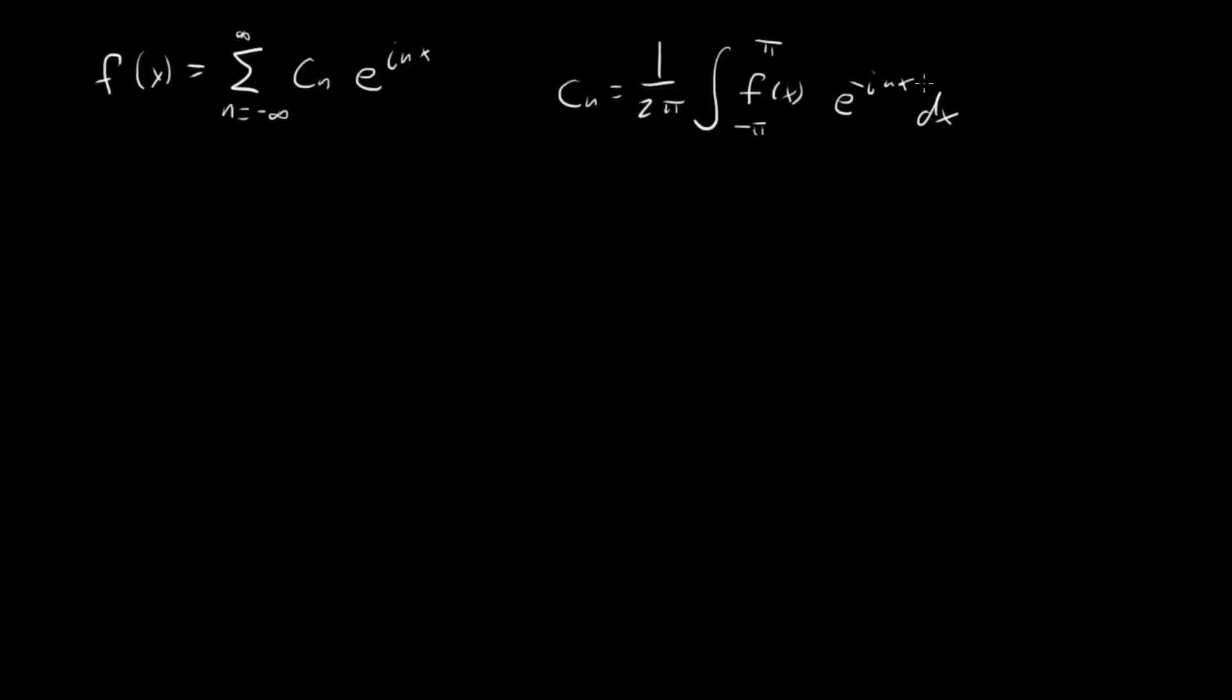f of x e to the minus i n x dx. Okay, that's good. So what happens when we try and do this for the delta function? Well, our c_n is going to be 1 over 2 pi integral minus pi to pi delta of x e to the minus i n x dx.